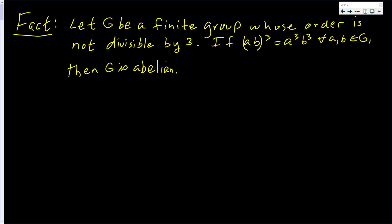If it turns out that the group has this property that (ab)³ equals a³b³ for all a, b in the group, then G is an abelian group.